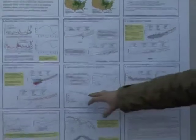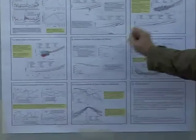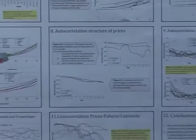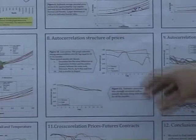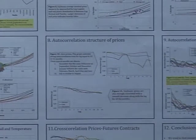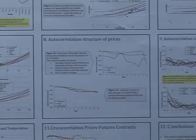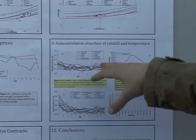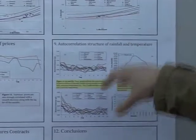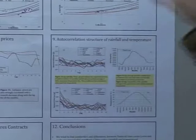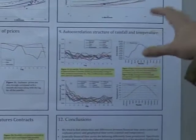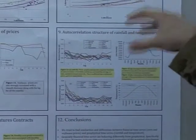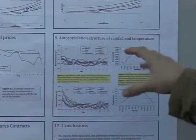We see that there is a strong autocorrelation structure in the commodity prices for both corn and soybean, which is not the case for rainfall and temperature, where the autocorrelation structure is not strong.